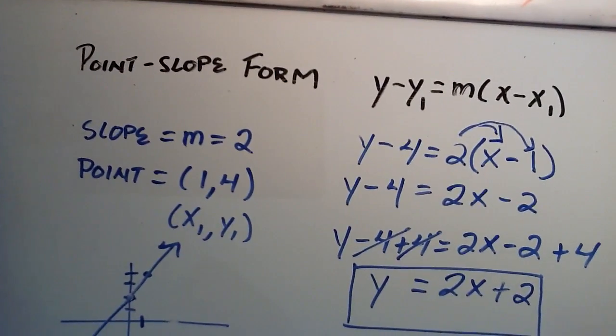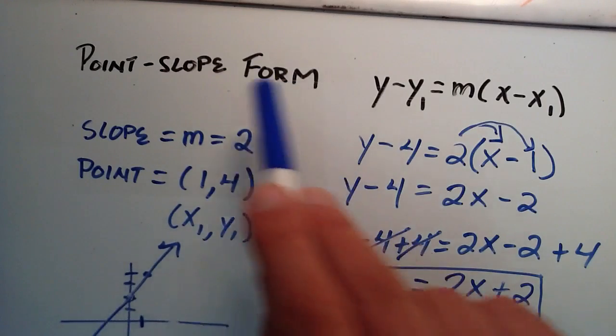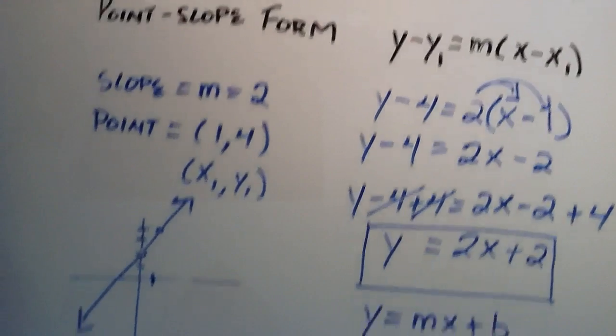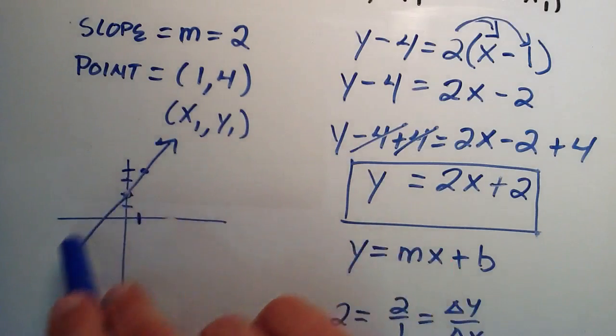So I started with a slope and a point on the line, and from that I used the point-slope form to derive what the line looks like in slope-intercept form, and then from the slope-intercept form of the line, I was able to do a quick sketch of our line.